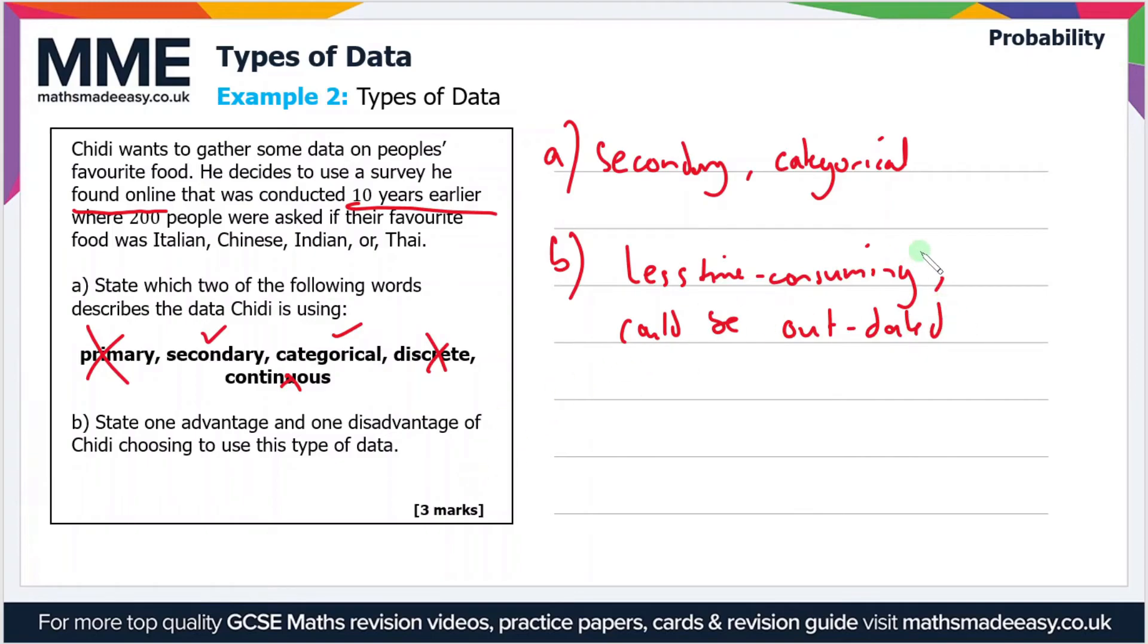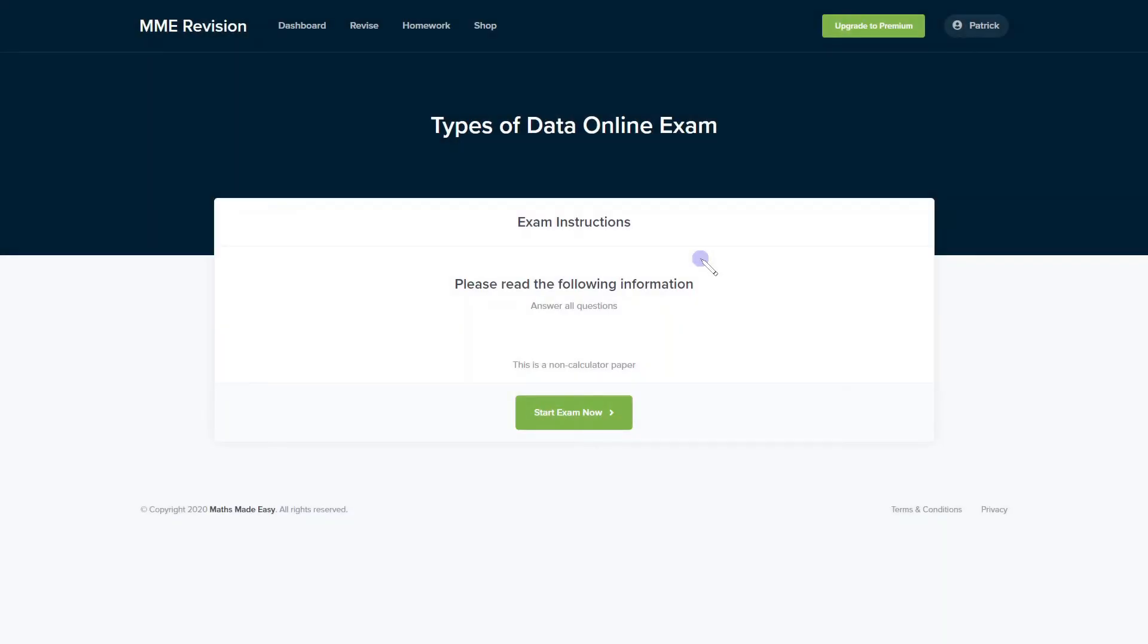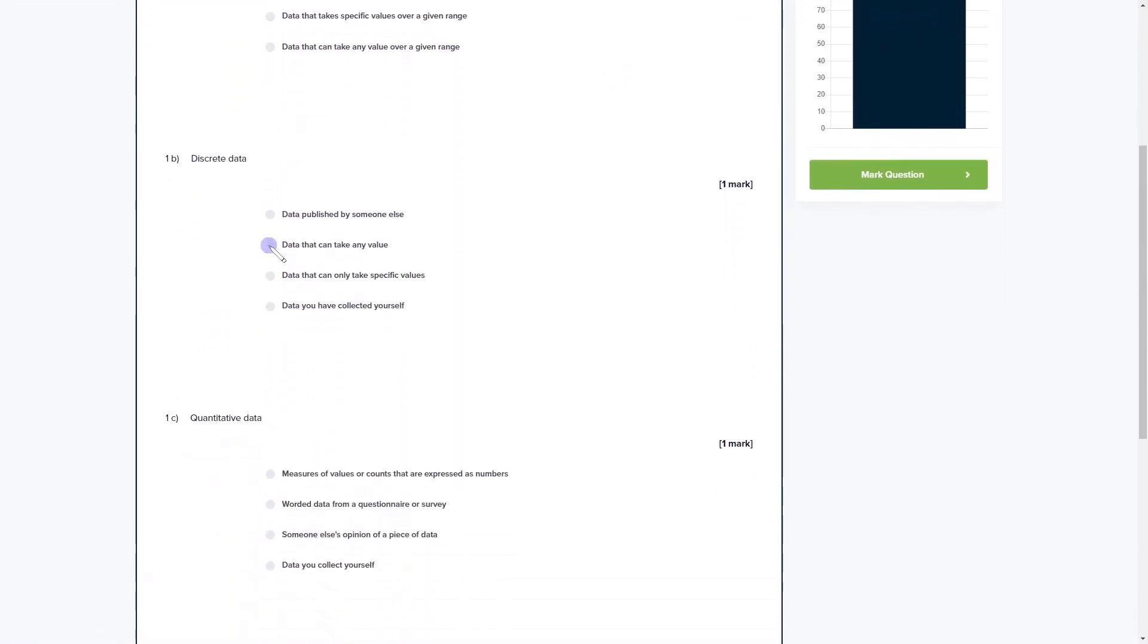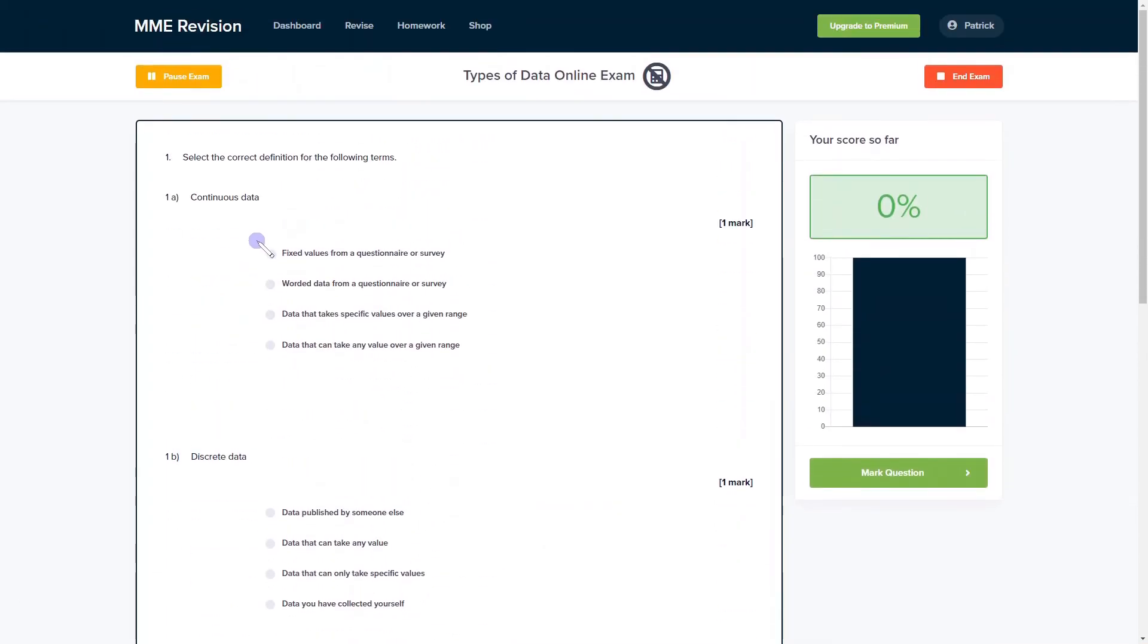Okay, so that's one advantage and one disadvantage. So that would be enough to get you all three marks in this question. So if you want to test yourself on types of data, you can do so with our online exam. It's available through our revision platform, and you'll find loads of different questions so you can practice all the different types of data. And all the feedback is available instantly, so you can keep track of your progress and find out which areas you're weak on as well as which areas you're strong on and find out where you can improve. So if you're interested, then you can take the test by clicking the link below.